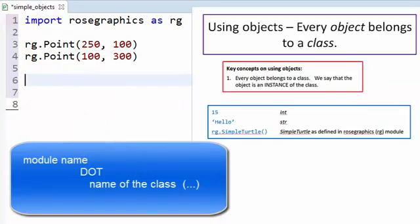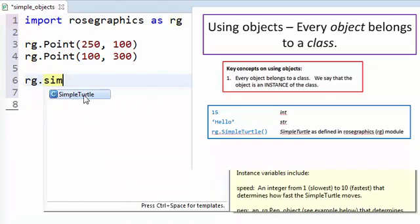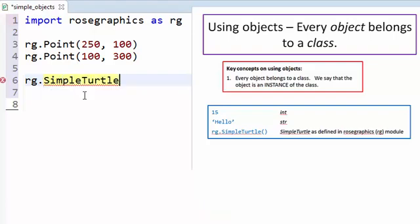Let's test your understanding. Suppose you want to construct a simple turtle as defined in the Rose Graphics module — what should you type to do so? Pause the video and decide, then unpause. I hope you decided that you should type rg.simpleTurtle with parentheses. Note that you can press enter to let Eclipse type the class name after you type a few letters, to avoid misspelling names and so you don't have to memorize the exact spelling.